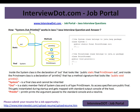The static field is of type PrintStream, and PrintStream has a method called println. You're directly calling it without creating any object, and whatever string is passed will be printed on the standard console. This is how you can explain it.